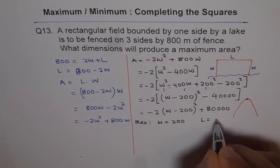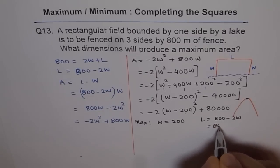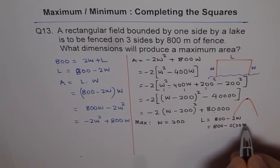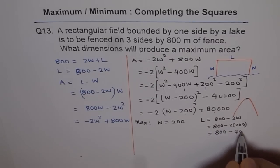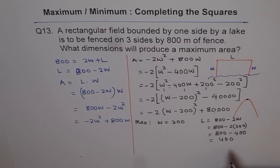So length should be 800 minus 2W. So we have length equals to 800 minus 2W, which is 800 minus 2 times 200. So which is 800 minus 400. And that gives us length of 400.